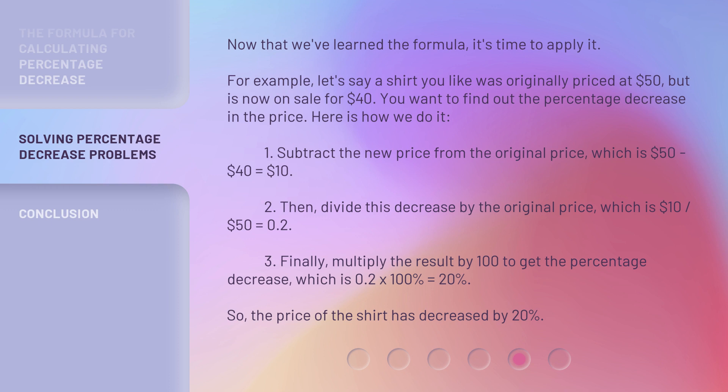3. Finally, multiply the result by 100 to get the percentage decrease, which is 0.2 × 100% = 20%. So, the price of the shirt has decreased by 20%.